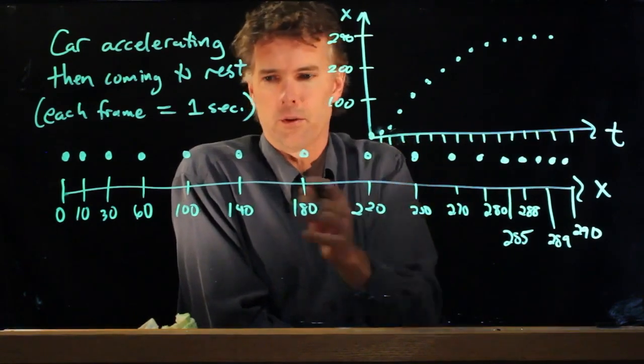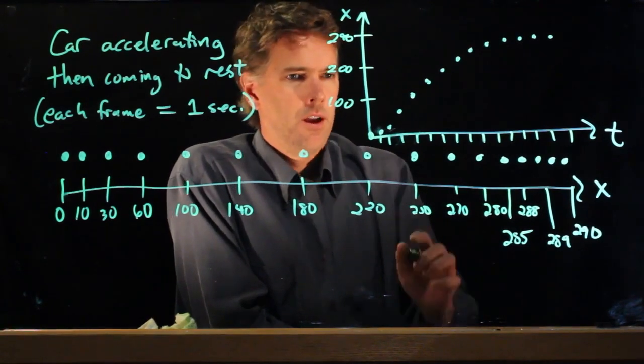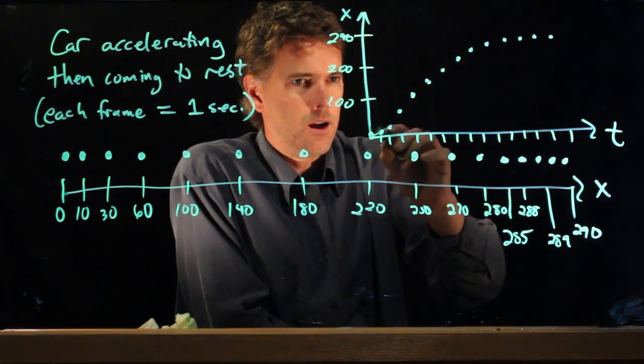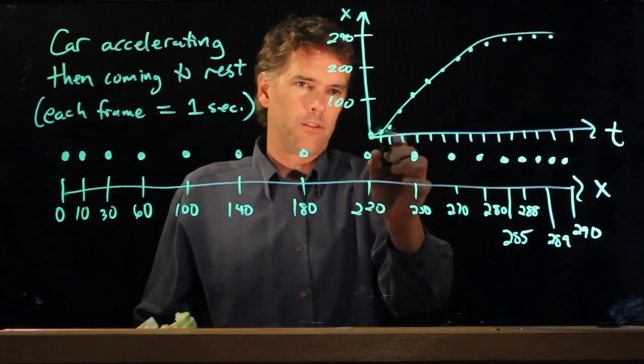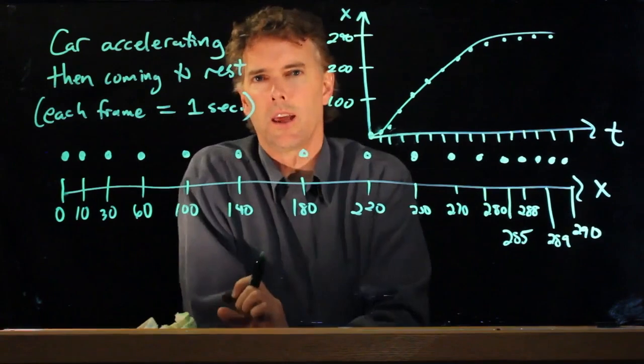It's a series of points, of course, since we had data that was individual numbers. But to aid the eye, we can draw a line. Okay. Accelerating, constant speed, decelerating. Something like that.